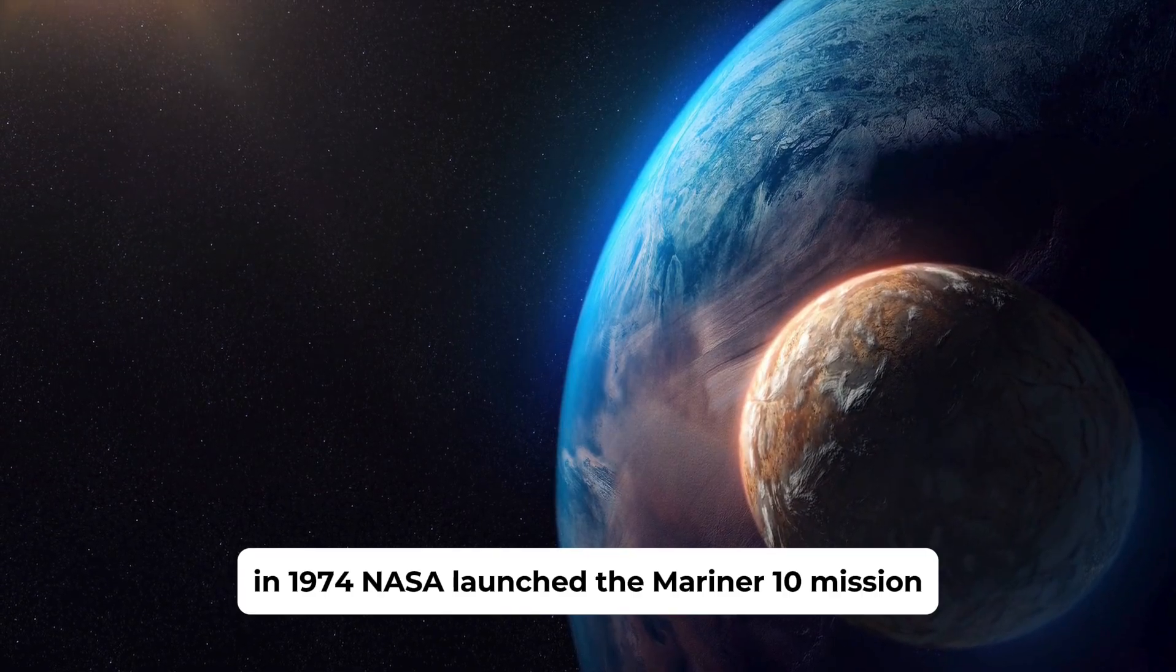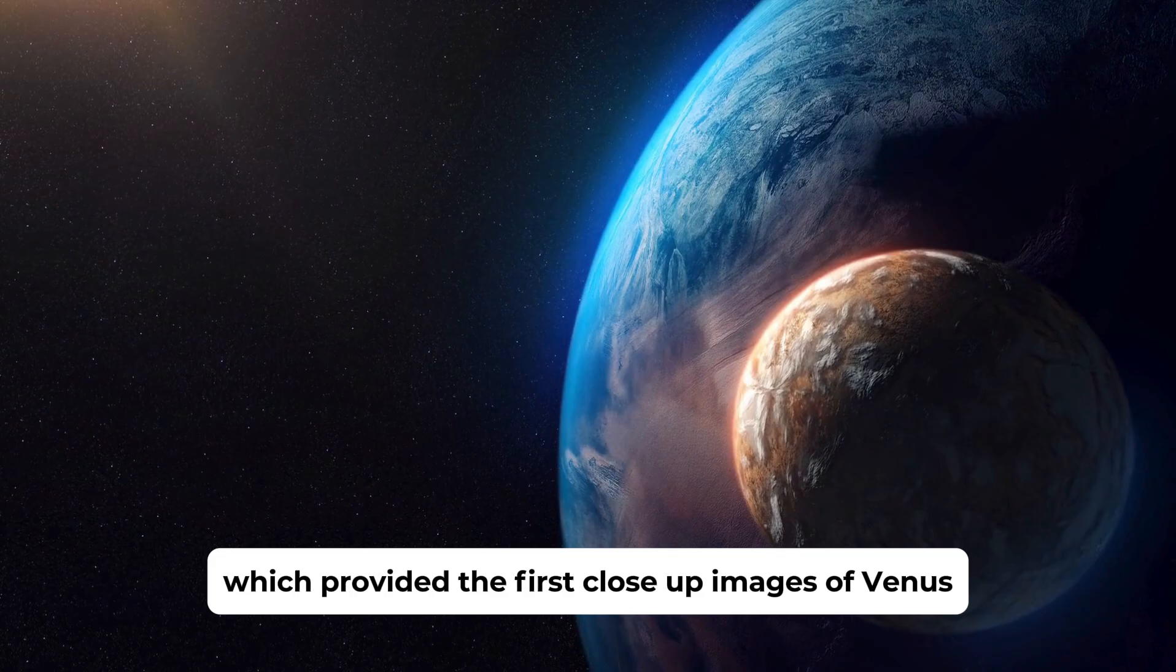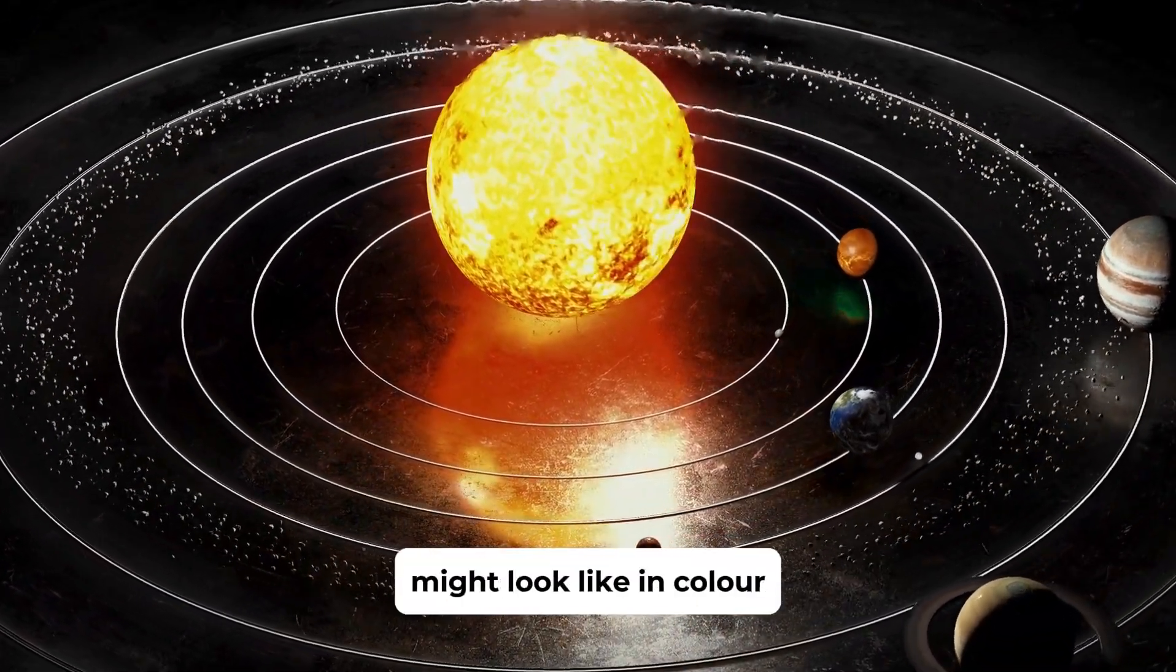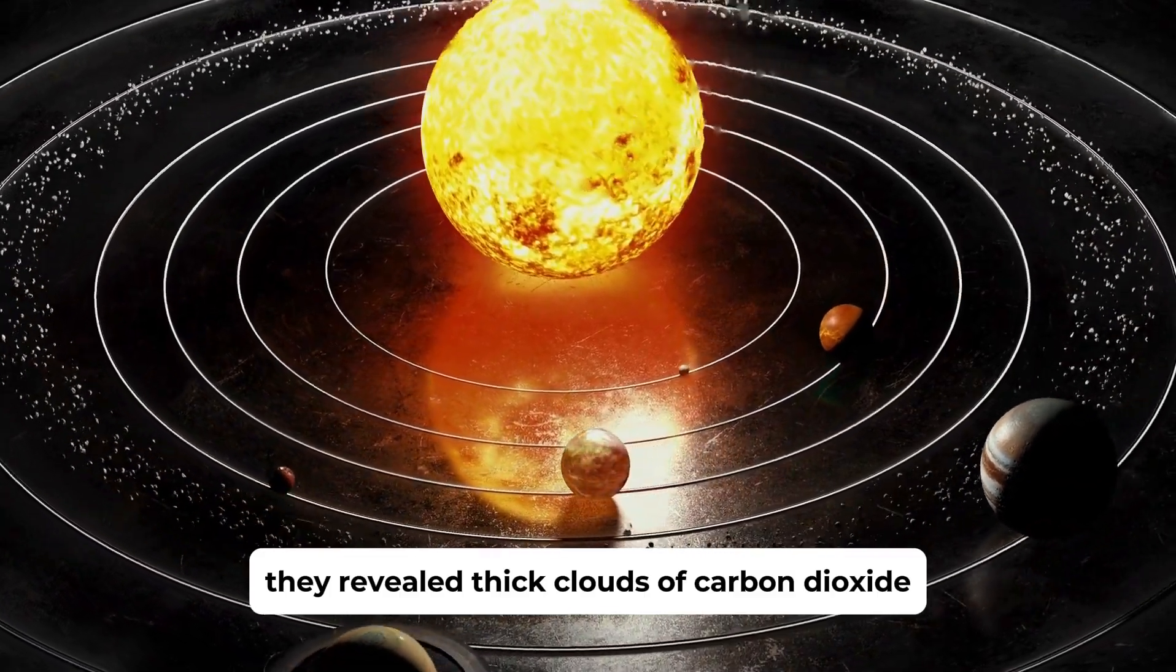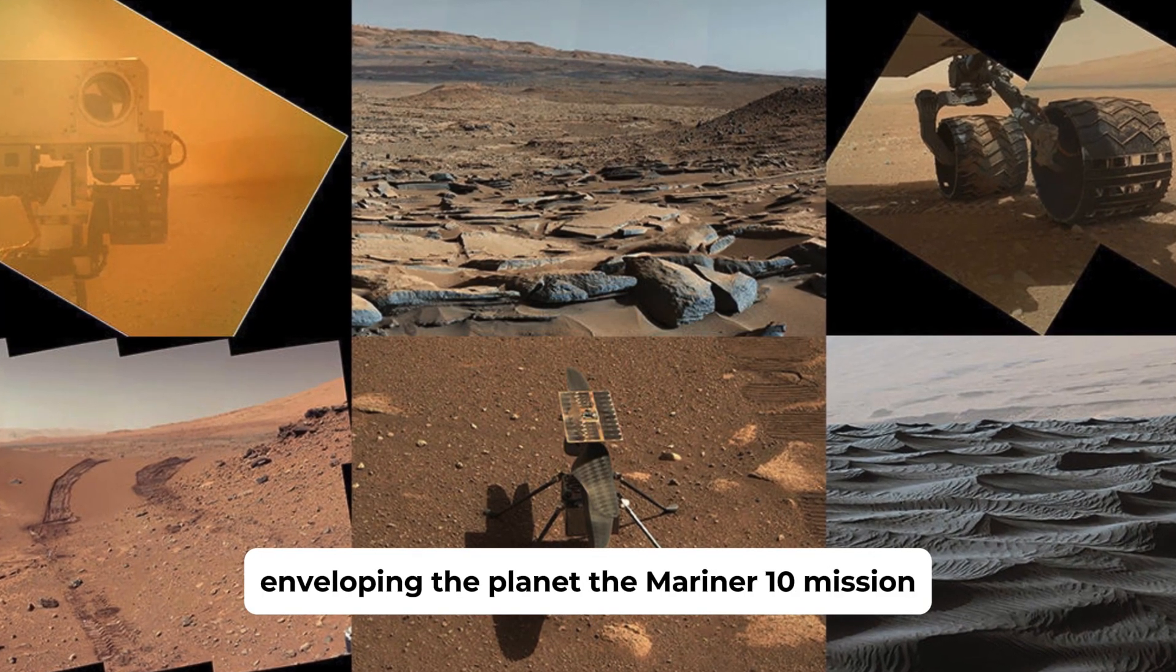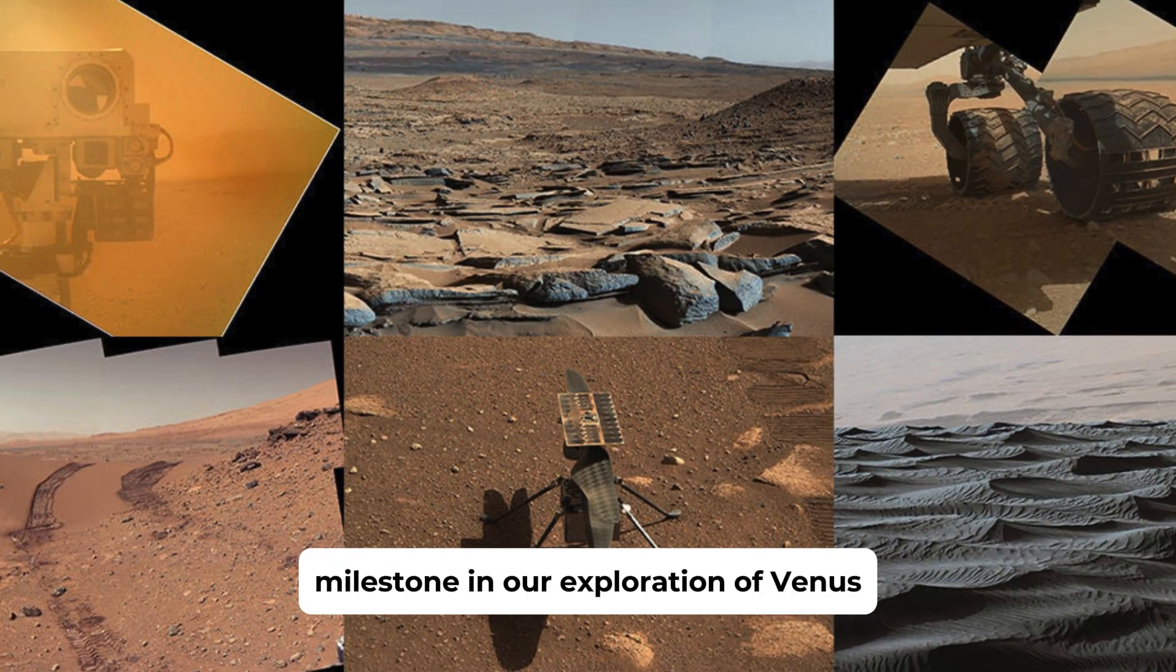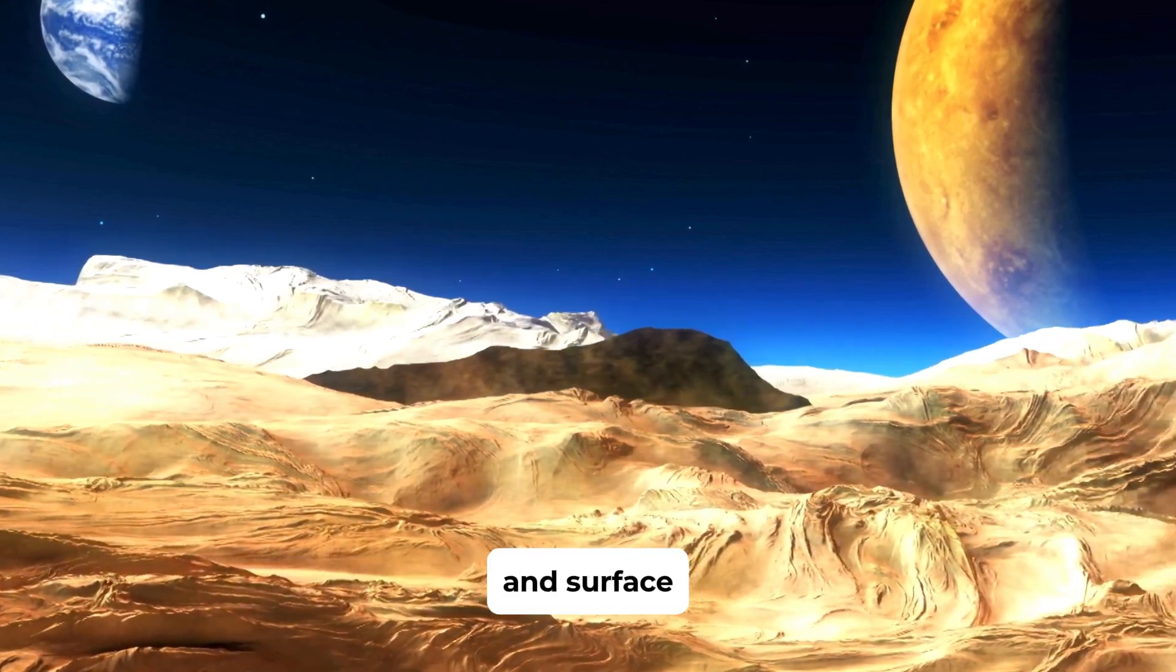In 1974, NASA launched the Mariner 10 mission, which provided the first close-up images of Venus. Although the images were edited to represent what Venus might look like in color to the human eye, they revealed thick clouds of carbon dioxide enveloping the planet. The Mariner 10 mission marked a significant milestone in our exploration of Venus and provided valuable data that contributed to our understanding of the planet's atmosphere and surface.